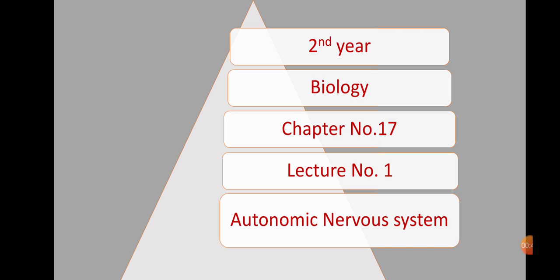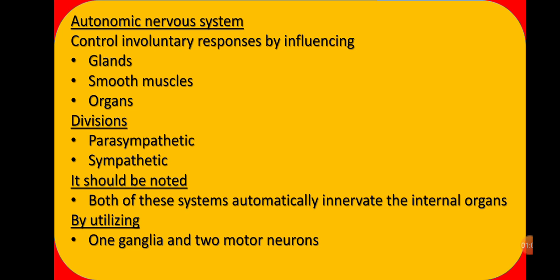We were studying Chapter Number 17, which is about coordination and control. We had studied some portion of chapter 17 before your vacations. Now we will continue with the remaining part. So far we were studying the peripheral nervous system, and today's topic is the autonomic nervous system.